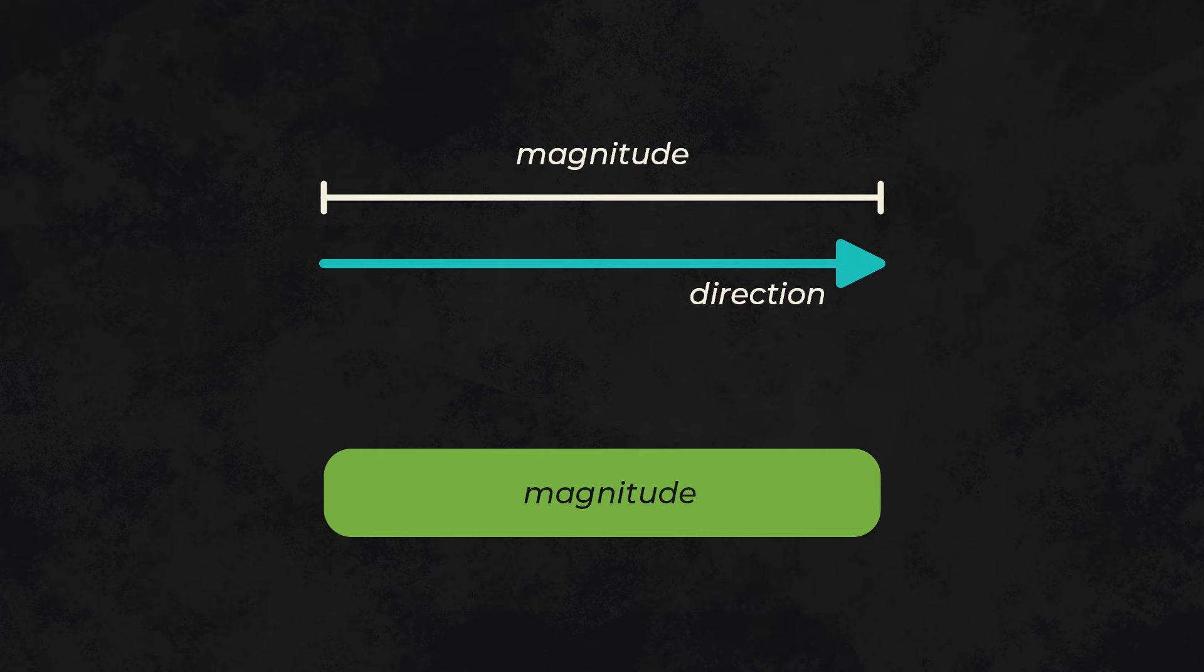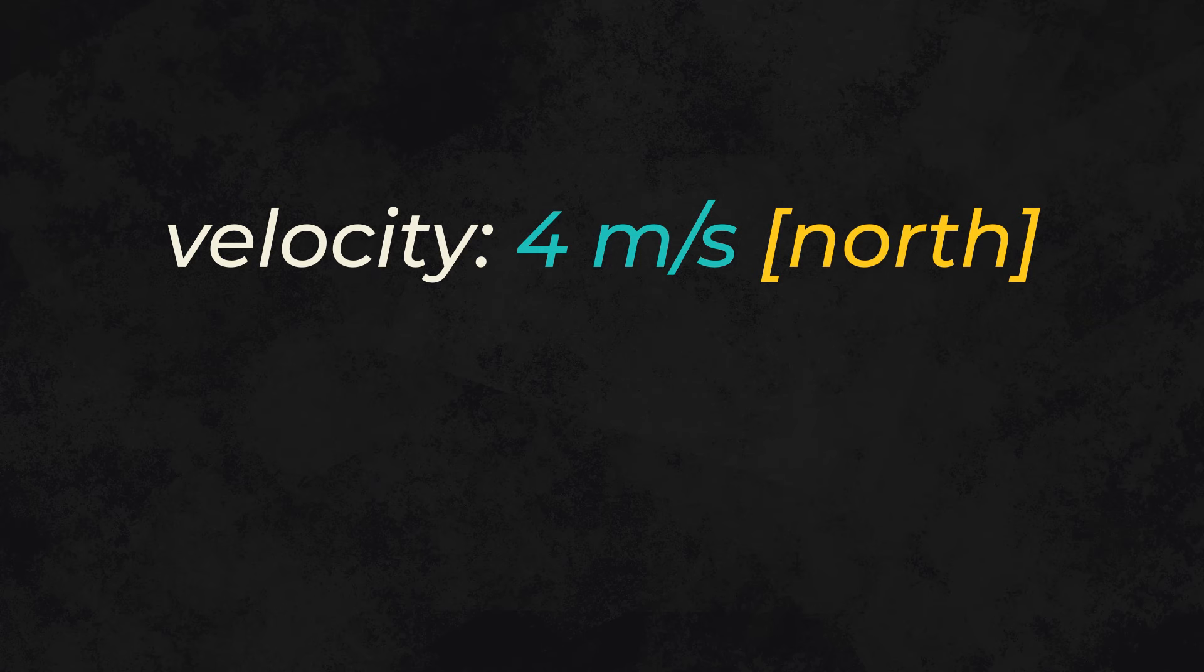For example, velocity has a magnitude, which is your speed, and a direction, whereas speed just has a magnitude.